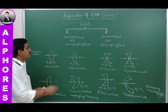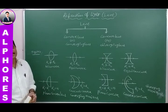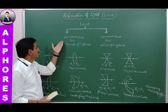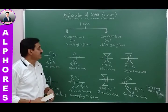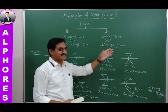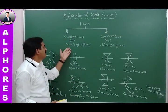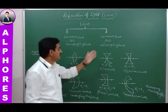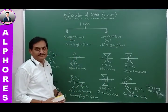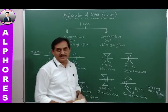A lens is of two types: one is a converging lens or convex lens, and the other is a concave lens or diverging lens.